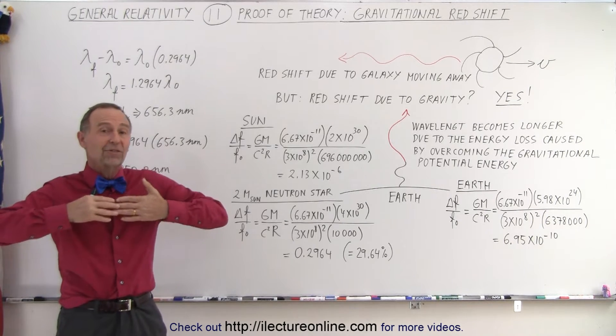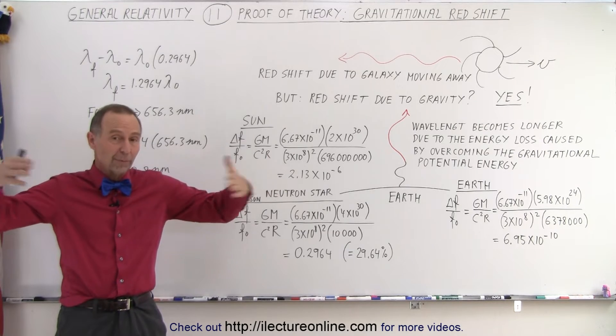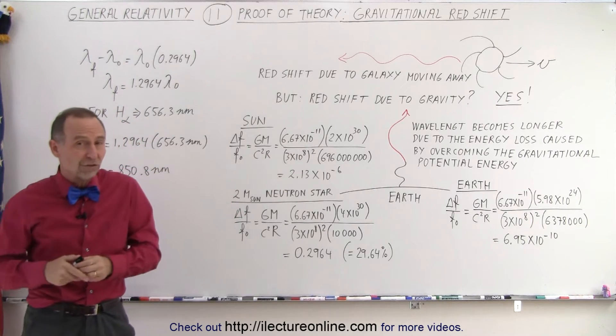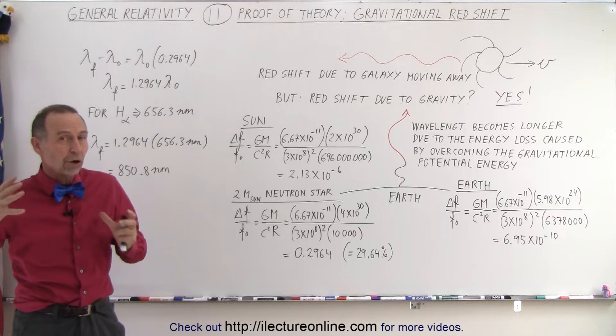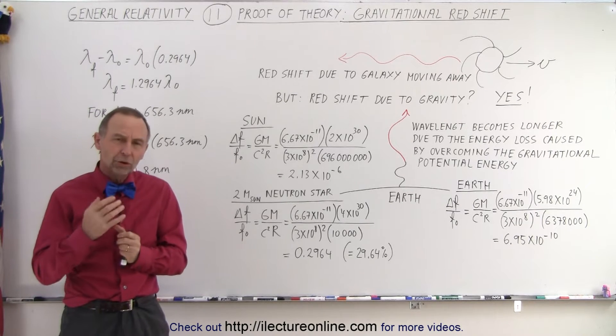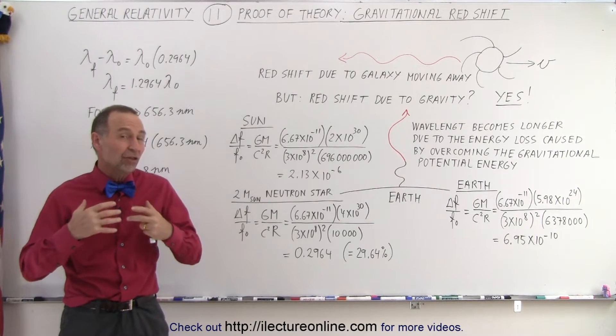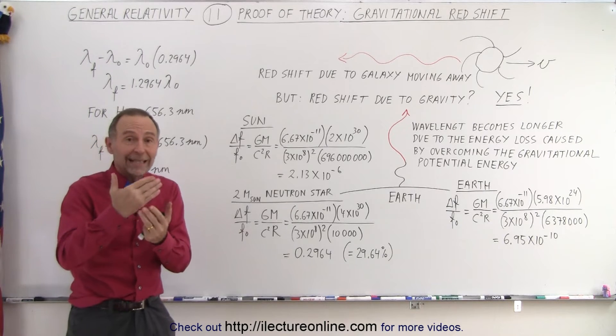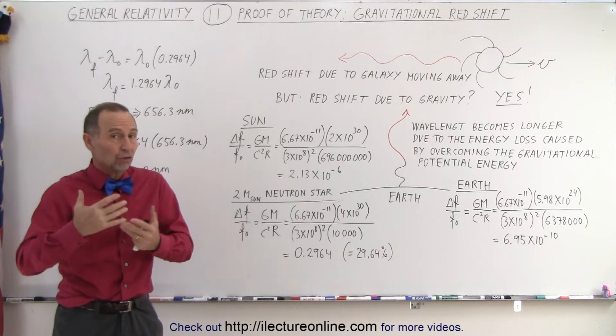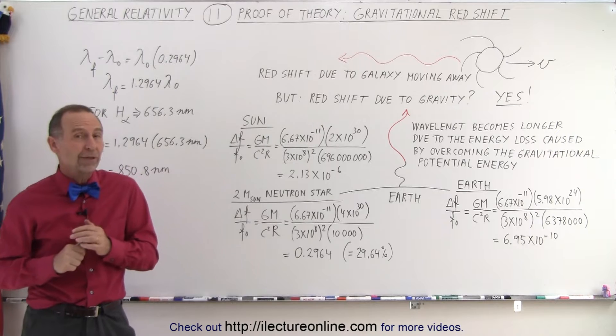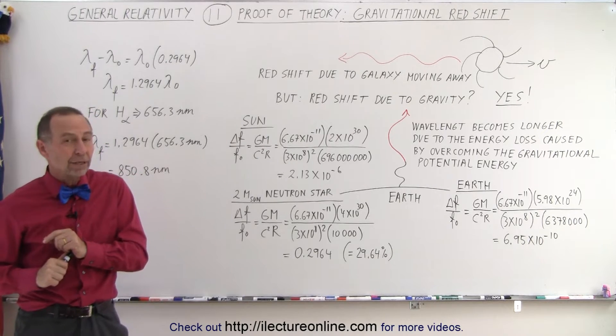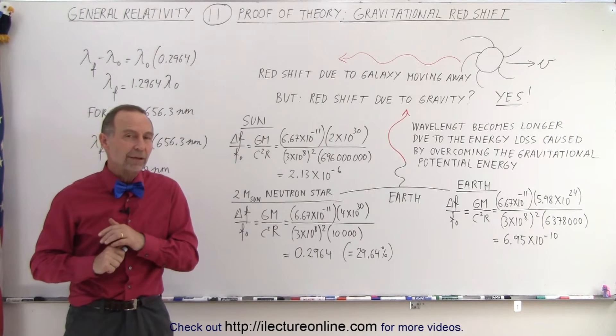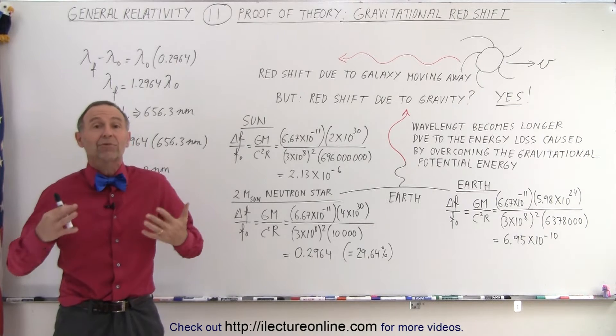Since most galaxies in the universe are moving away from us, most galaxies show that redshift. The faster they're moving, the larger the redshift. But could there be a redshift due to the gravitational potential energy laws when light leaves an object like a planet or a star? Perhaps. Einstein predicted that because of the general theory of relativity, and it turns out he was absolutely correct.